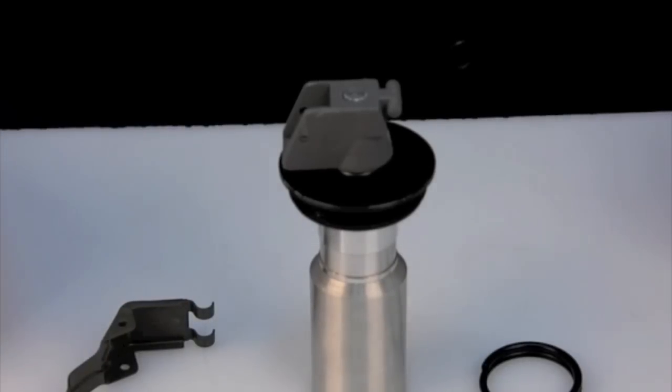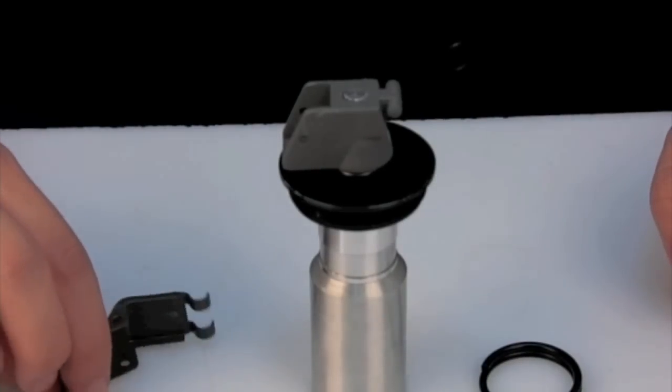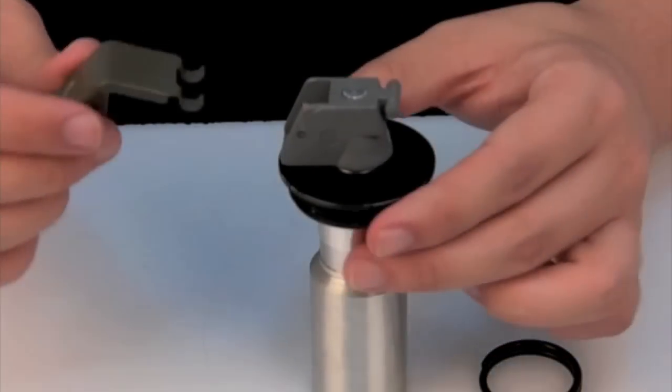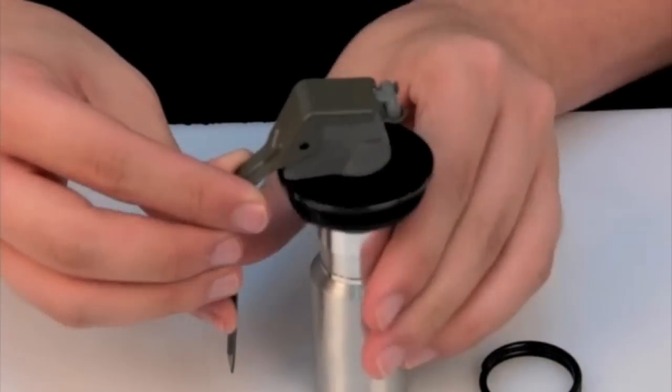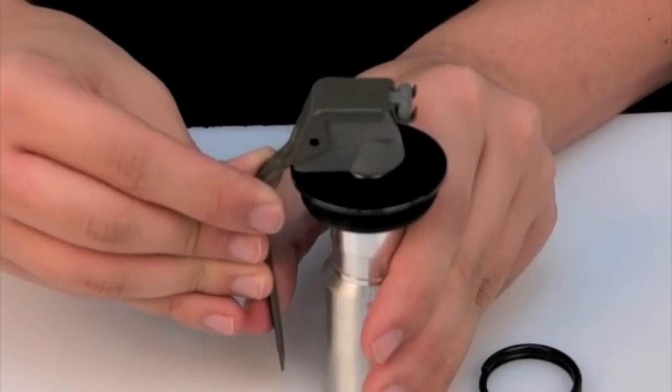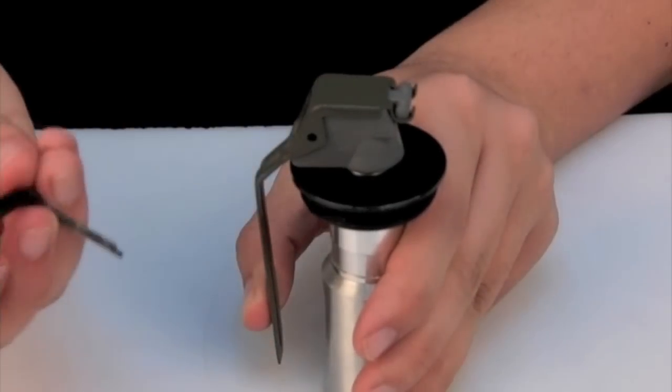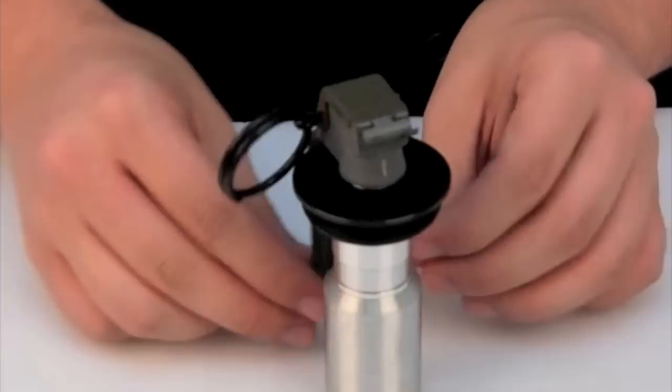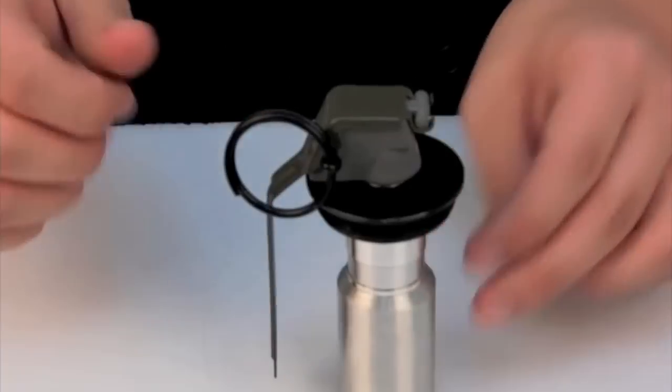So now we move on to the core of the grenade. The first thing we need to do is install the spoon lever and the pin onto the core. The lever has a pair of hooks which catch onto the top like so. When placed down under spring tension, now the holes will line up. We take the pin and place it in the hole. Now the core is assembled and ready to be gassed.